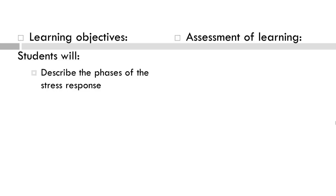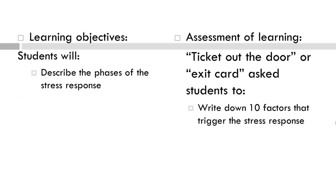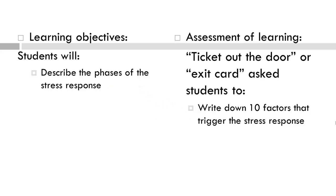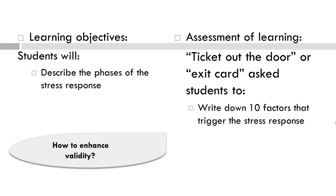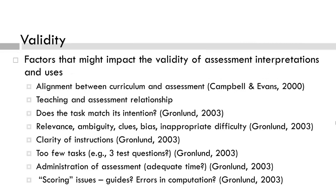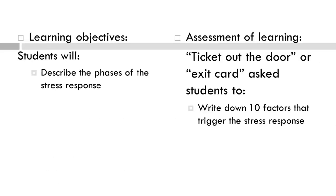Here's an example of a learning objective for a particular lesson. At the end of the lesson, students were asked to complete a ticket out the door or exit card to demonstrate if they achieved the learning objective: to describe the phases of the stress response. When the teacher read the exit cards, she was shocked at the students' lack of understanding of the lesson. Does the assessment match the learning objectives? The students were asked to describe the phases of the stress response — did the exit card address the phases of the stress response?